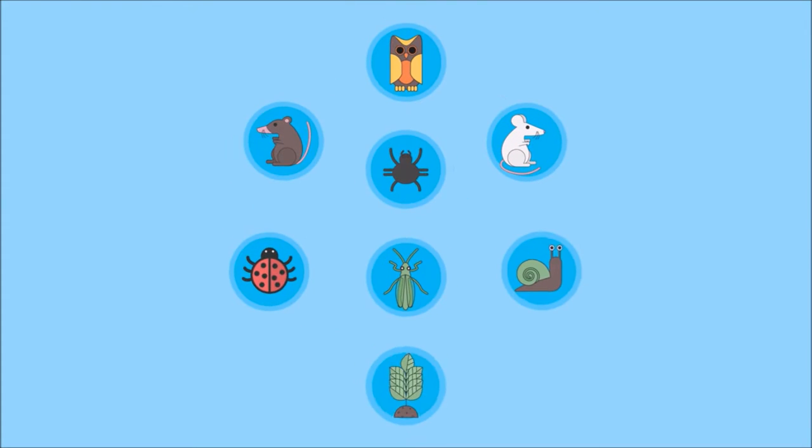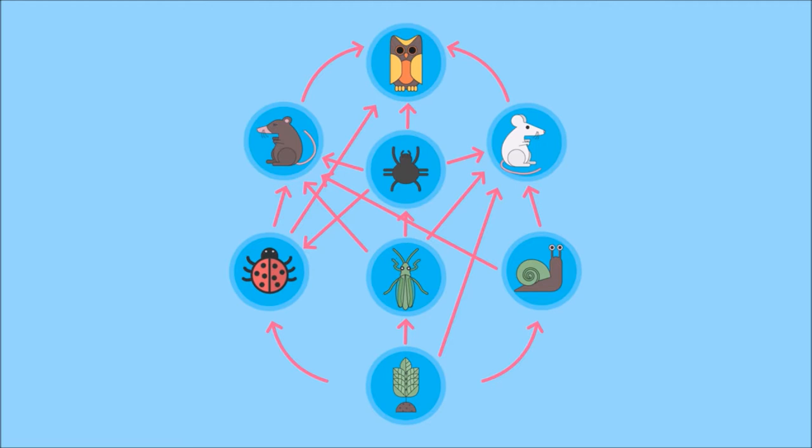So let's take the food web of a woodland environment as an example. This food web is the combination of 11 different food chains, so we can start to see how the species are interdependent on one another.